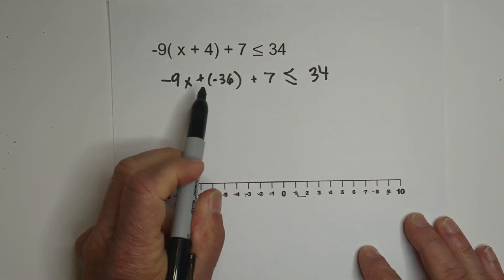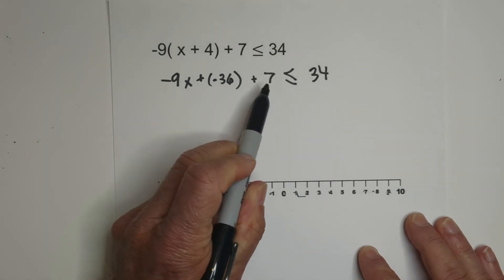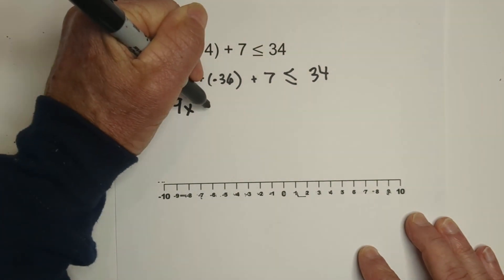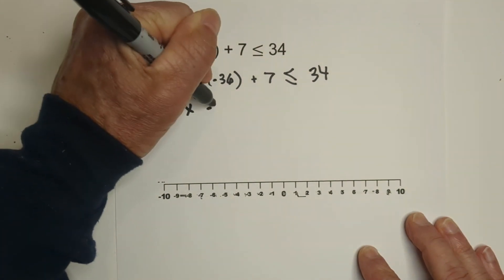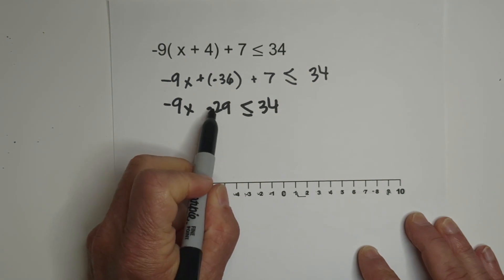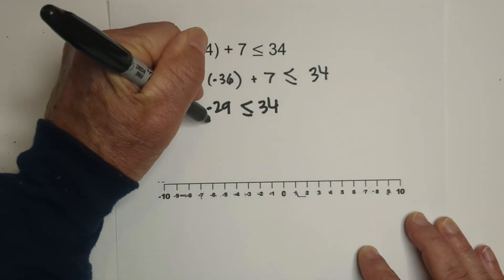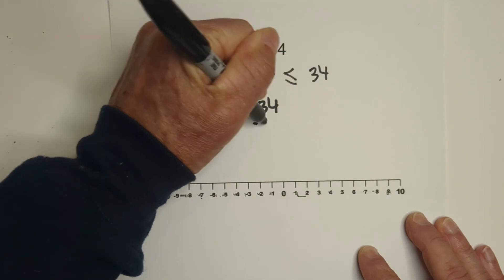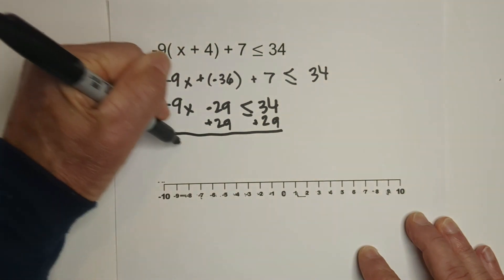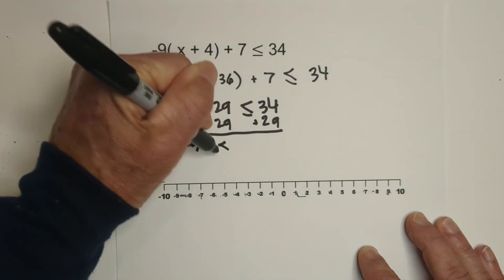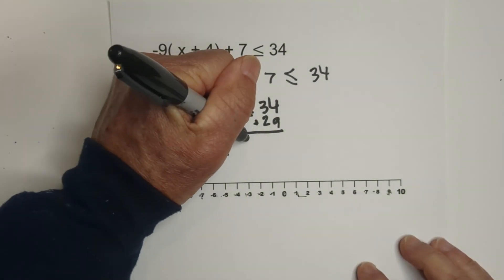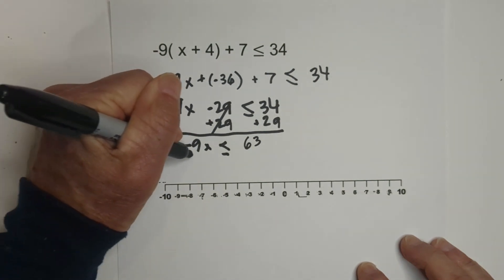Now we can combine like terms, negative 36 and positive 7. Bring this down, and that will equal negative 29. That is less than or equal to 34. So let's move the 29 to the other side by adding 29 to both sides. When we bring this down, we have negative 9x is less than or equal to, these cancel, so this is 63, and then we're going to divide through by negative 9.